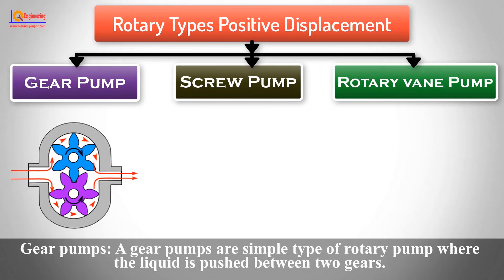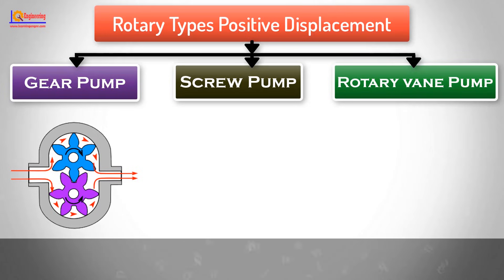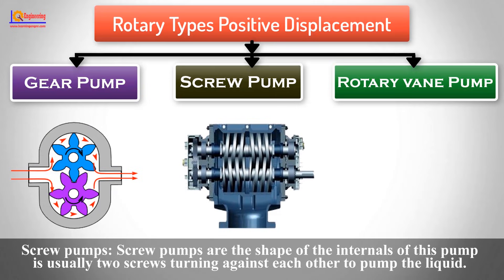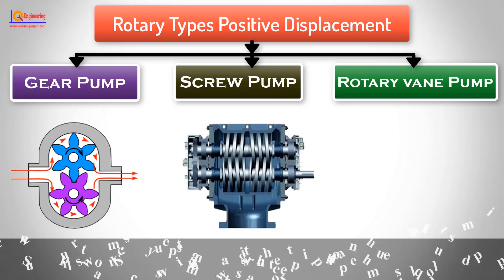Gear Pumps are a simple type of rotary pump where the liquid is pushed between two gears. Screw Pumps have an internal shape that is usually two screws turning against each other to pump the liquid.